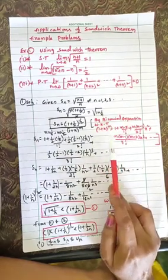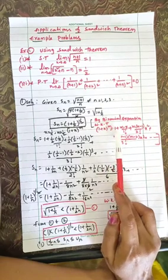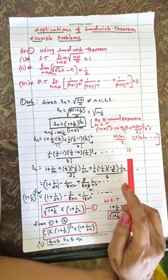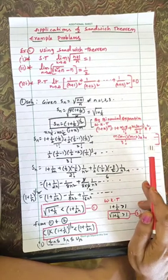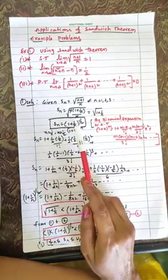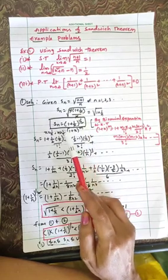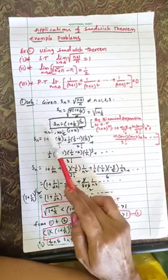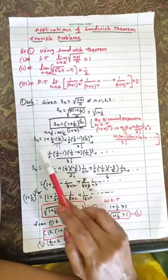By binomial expansion we know that (1+x)^m = 1 + mx/1! + m(m-1)x²/2! + and so on. Here m is the power, given as 1/2, and x is 1/n. So according to the formula you substitute.